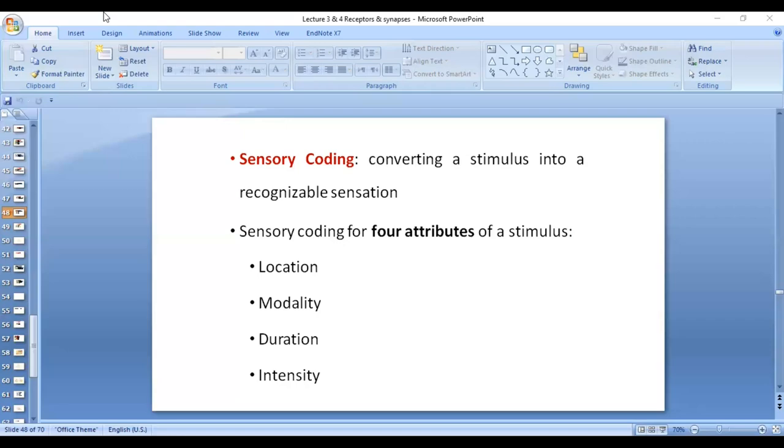Differential sensitivity, as well as labeled line principle. Because the modality of sensation is determined by the area in the CNS where the nerve fiber ends. Each nerve fiber responds or transmits specific type of sensation. And receptors themselves, there is differential sensitivity in which they respond to specific type of sensation.